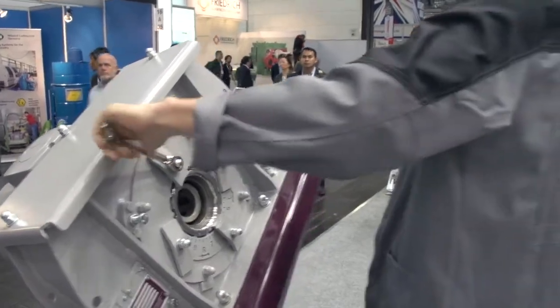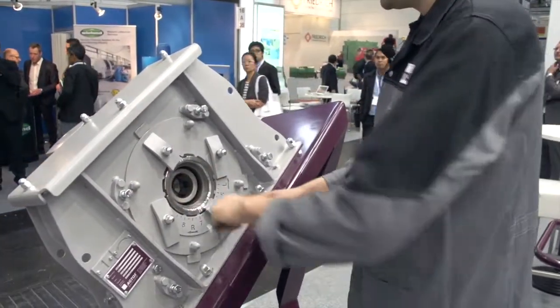Loosen the clamps of the guiding sleeve and swing them out of the way so that the guiding sleeve can be removed.